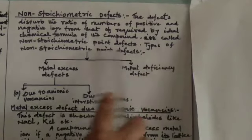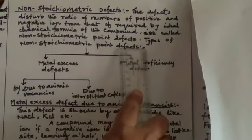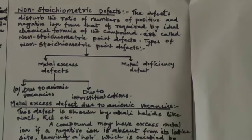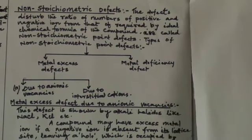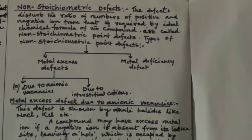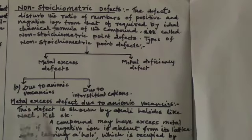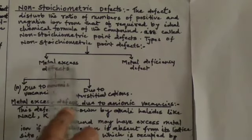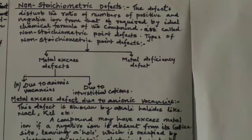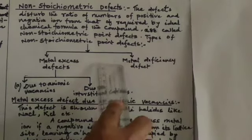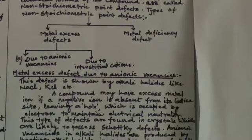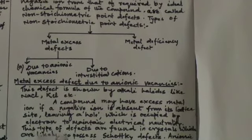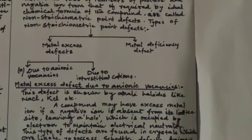Types of non-stoichiometric point defects: Non-stoichiometric point defects are basically of two main types. Number one, metal excess defect. And number two, metal deficiency defect.